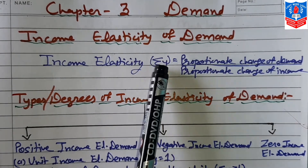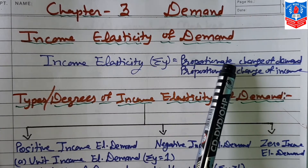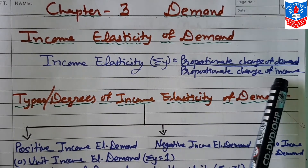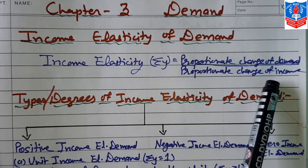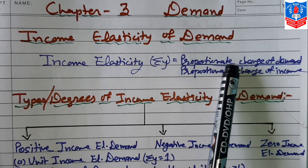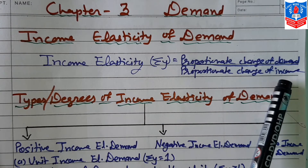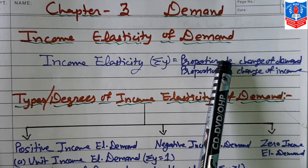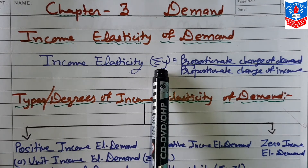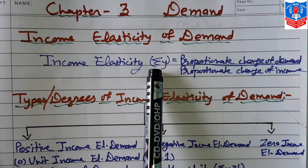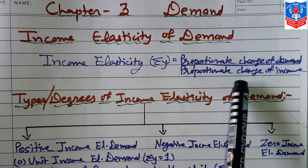What is income elasticity of demand? It is the extent of change in demand for a good because of a change in the income of the consumer. In price elasticity, we studied the effect of price changes on demand; here we measure the effect of income changes on demand. We denote it as EY, where Y stands for income. The formula is: proportionate change in demand upon proportionate change in income.